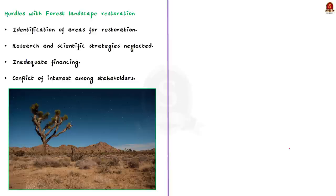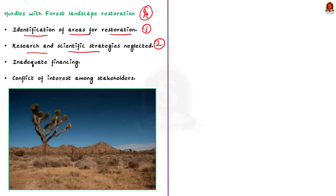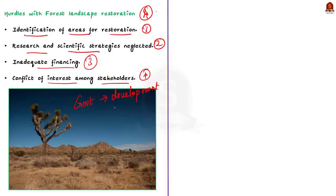Now we'll see the issues in forest restoration from an Indian perspective. The issues are fourfold: first, there are problems even in the identification of areas for restoration; second, not adequate importance is given to research and scientific strategies in tree planting; third, there is inadequate financing; and fourth, there is a conflict of interest among stakeholders — the government aims to provide development requiring infrastructure, which removes some forests, and claims the loss will be compensated by complementary forestation, while local forest dwellers want the forest to stay undisturbed.